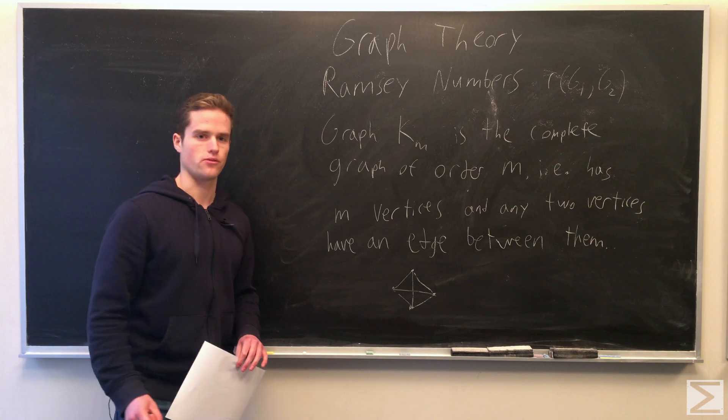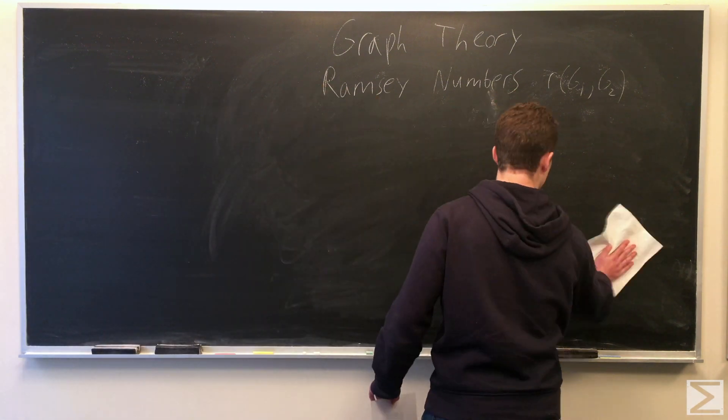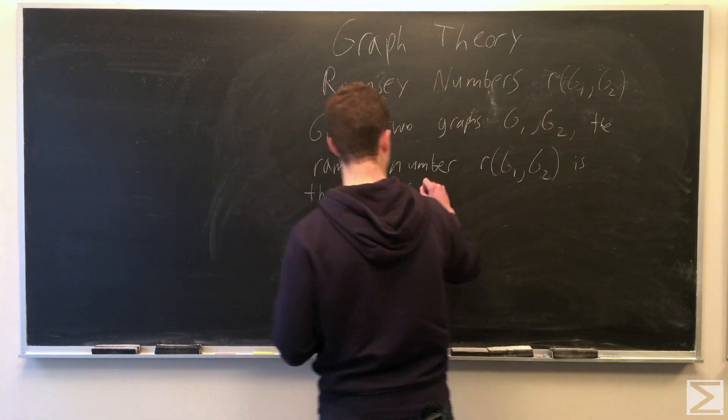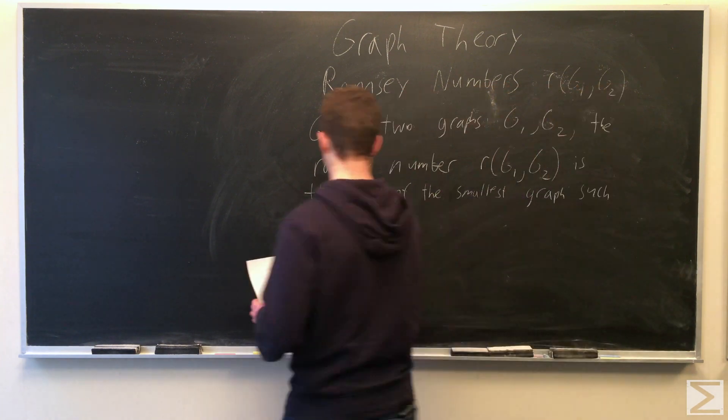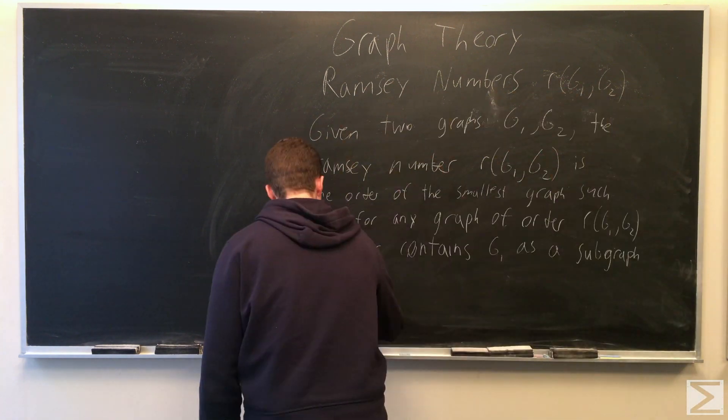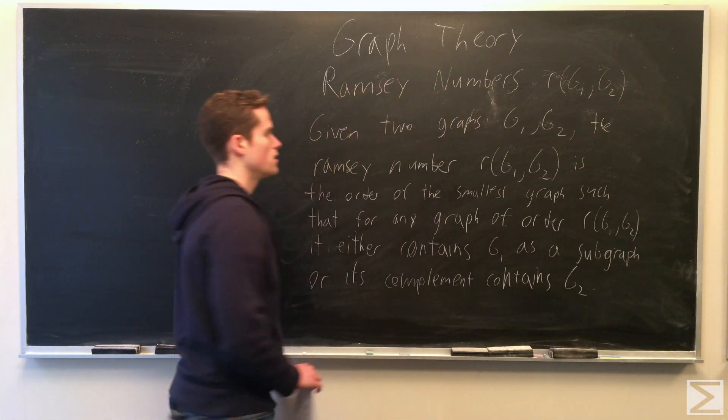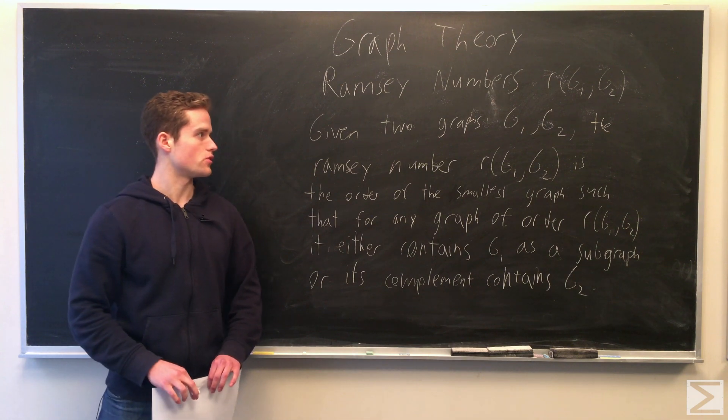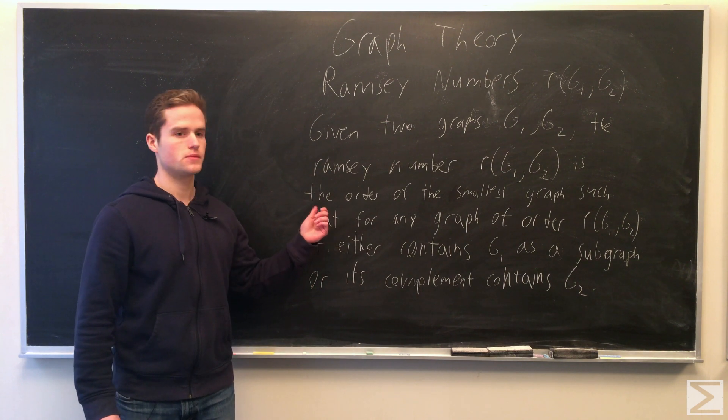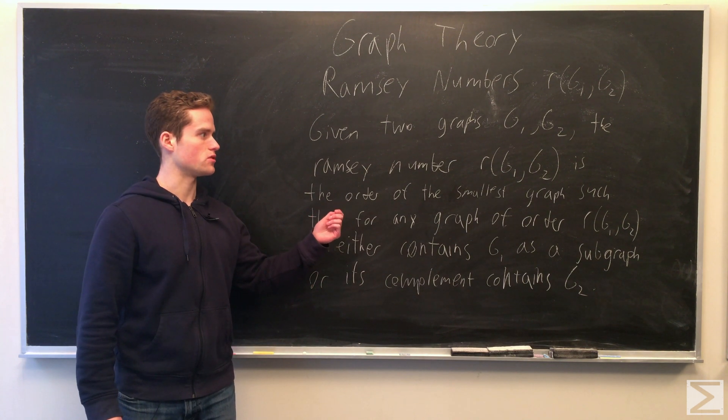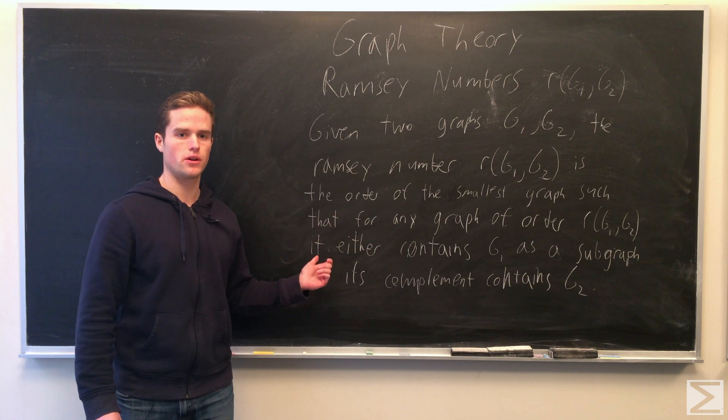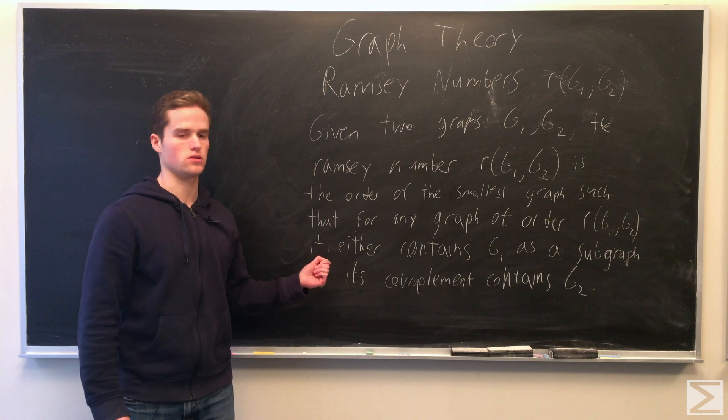Now we're going to define the Ramsey number. So if we're given two graphs, g1 and g2, we can define the Ramsey number of g1 and g2 as the smallest order such that any graph of that order or greater contains g1 as a subgraph or its complement contains g2 as a subgraph.